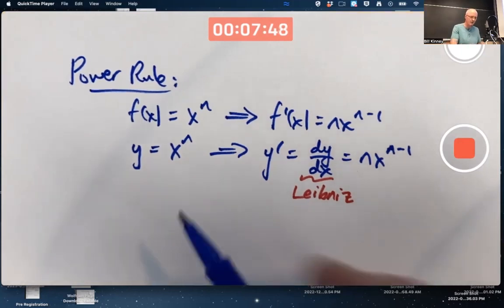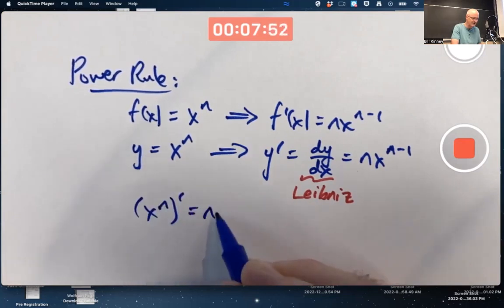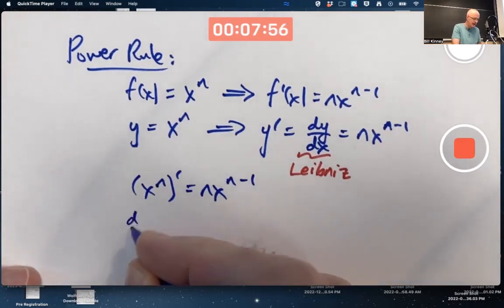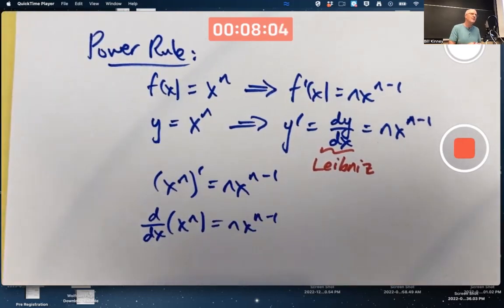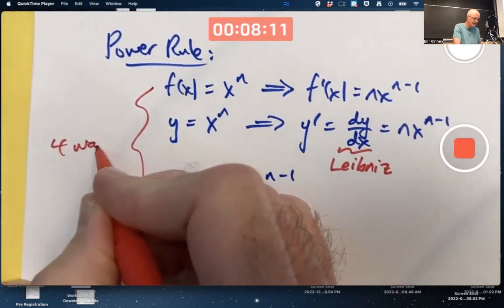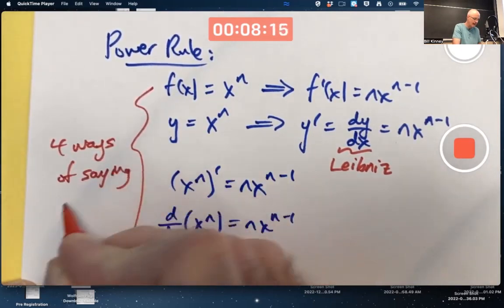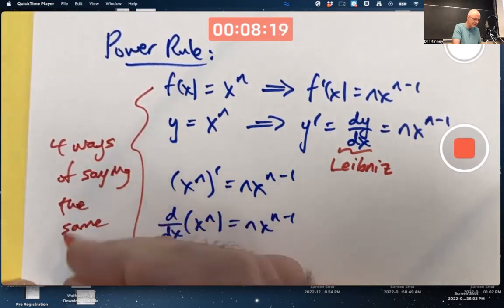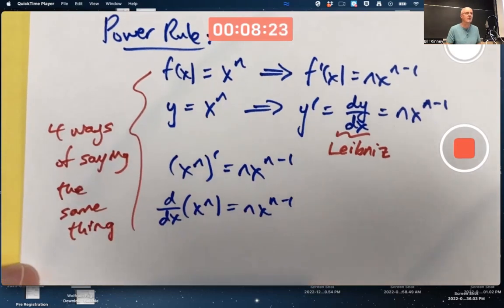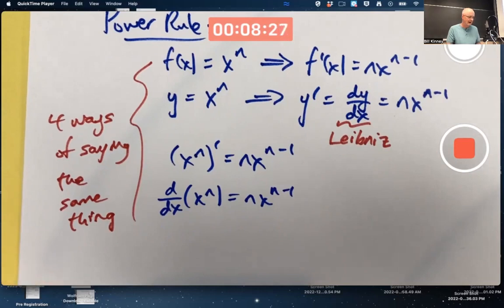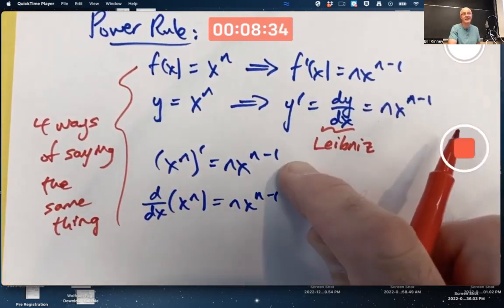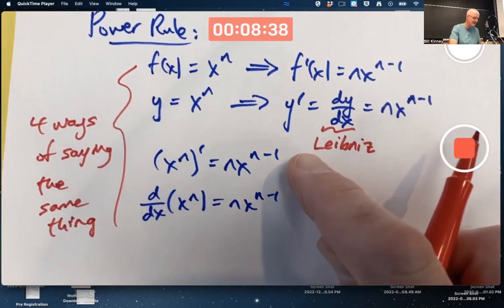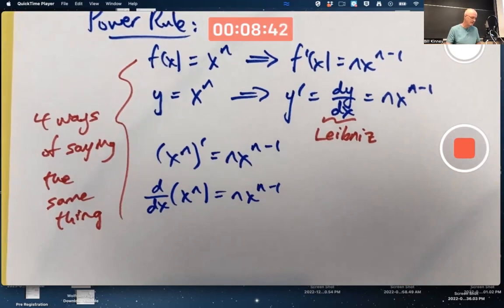More notation for the power rule. We could also write it as (x^n)' = n·x^(n-1), or d/dx of x^n = n·x^(n-1). These are all different ways of writing the same fact. Four ways of saying the same thing. They're not four different properties. They are the exact same property written in four different ways. I use this one, this one, and the last one the most.